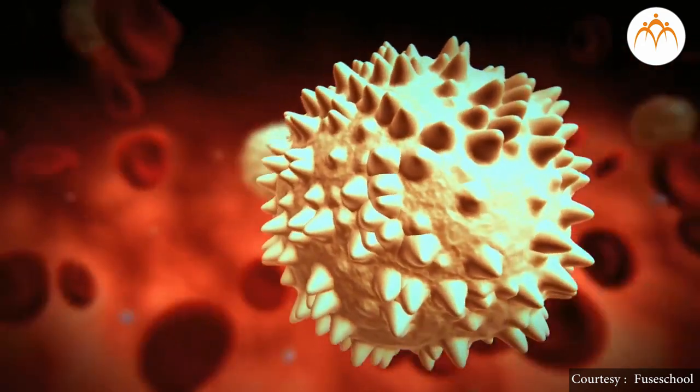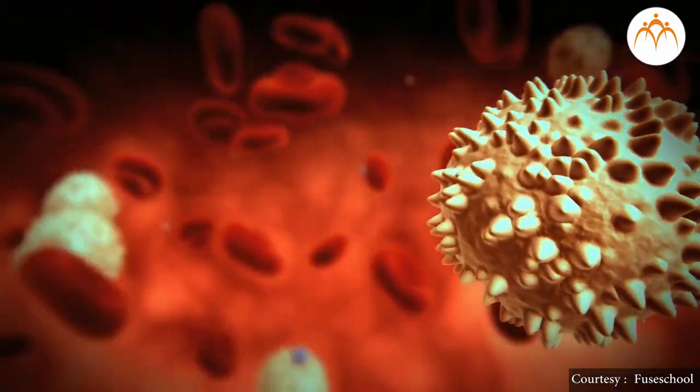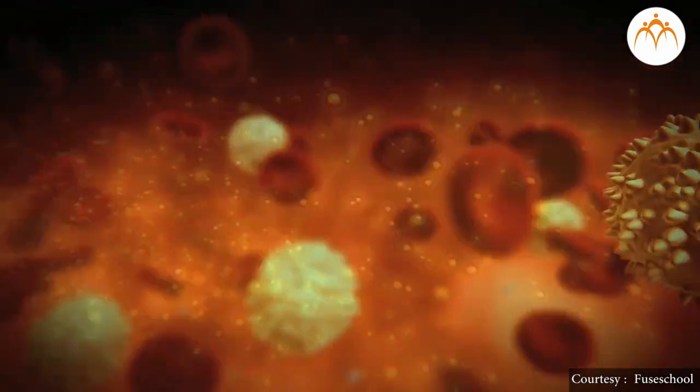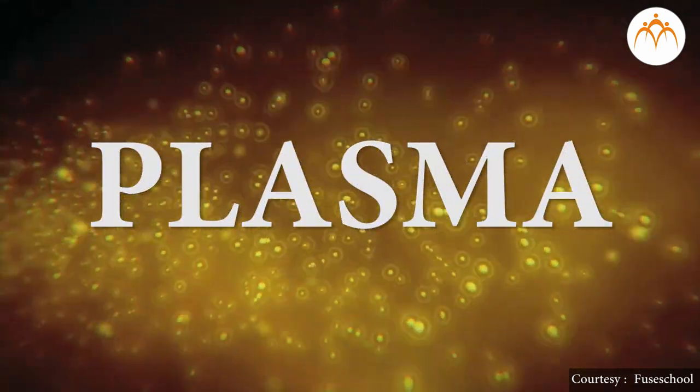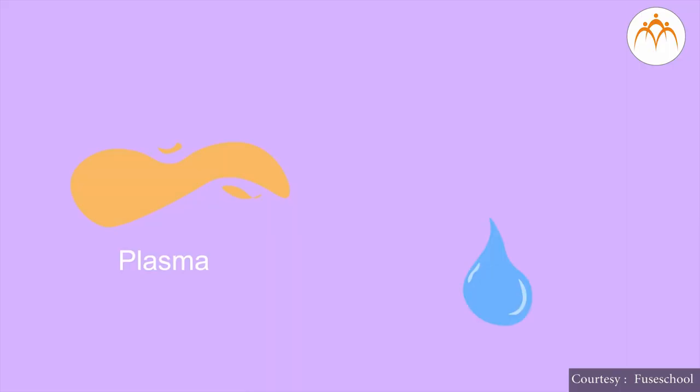Imagine a situation where floating blood cells are separated from blood. The colorless or pale yellow thick fluid left behind is plasma. Part of plasma is water, in which many materials are present in dissolved form.